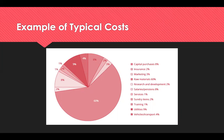Furthermore, individuals can dig into total cost numbers to separate fixed costs from variable costs and adjust operations to lower the overall cost of production. As shown on screen, about 60% of a typical organisation's expenditure would be spent on raw materials.